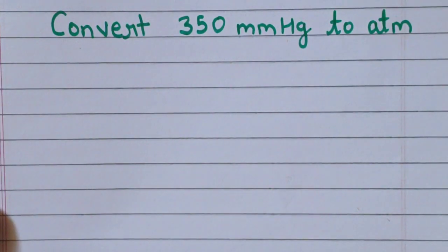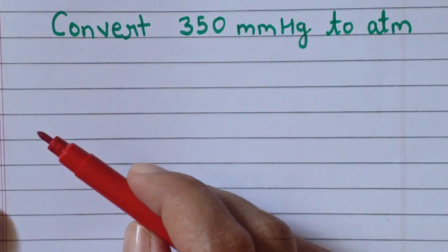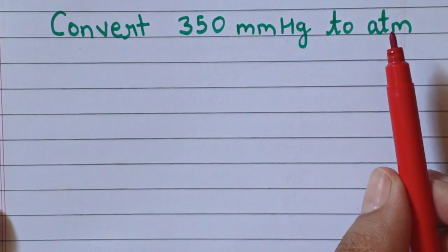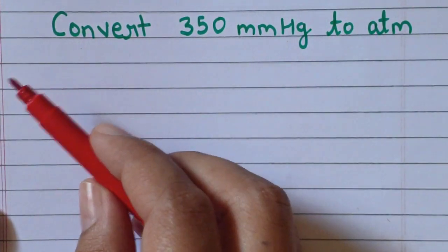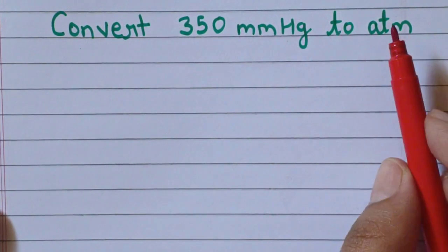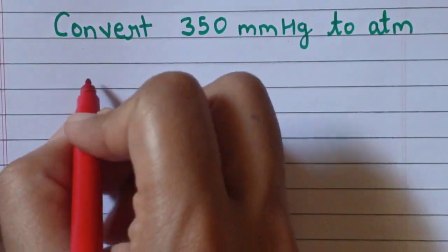Hello students, welcome back to my YouTube channel. So in today's video, I will discuss how to convert millimeter of mercury to atmospheric pressure. So here the question is: convert 350 millimeter of mercury to atmosphere.